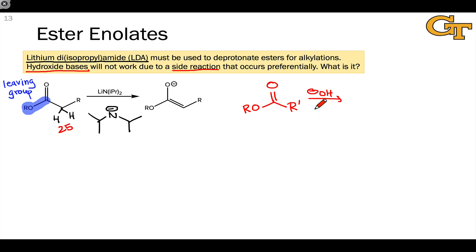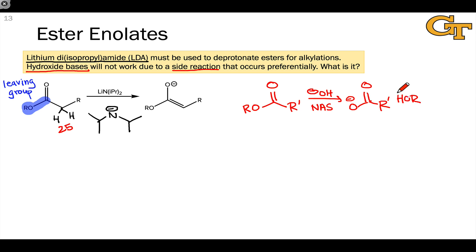What we end up with in saponification is a nucleophilic acyl substitution process, and ultimately, after a proton transfer, a carboxylate anion and an alcohol. This isn't what we wanted at all — the R prime group we wanted to deprotonate at the alpha carbon didn't react at all. We ended up with a carboxylate anion instead.